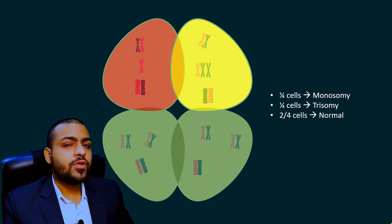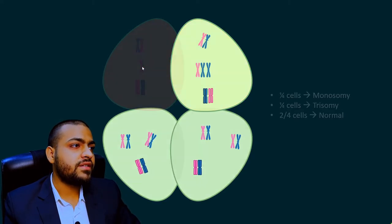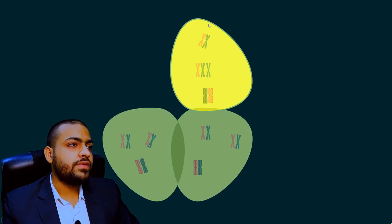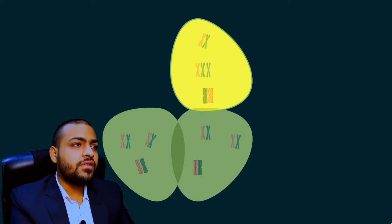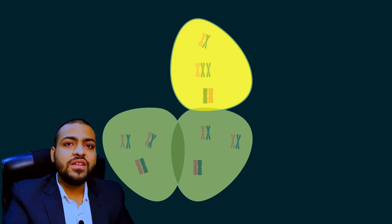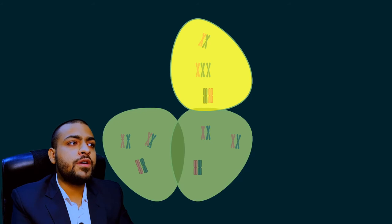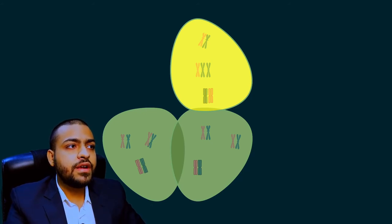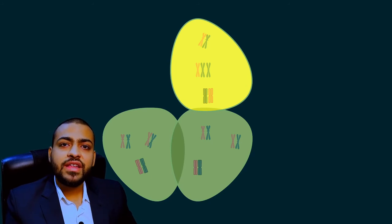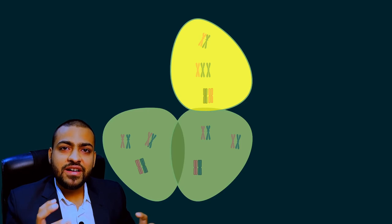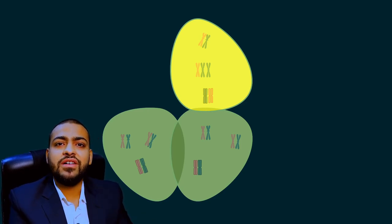Since these are autosomal chromosomes, the body cannot tolerate autosomal monosomy, so those cells will be lost. Ultimately, the early embryo now consists of a mixture of cells — some are normal and some have trisomy of chromosome 21. When this embryo develops into a complete human being, that pattern shifts into the person, who will then have some cells with trisomy 21 and other cells that are normal.